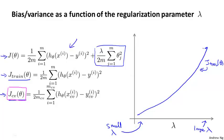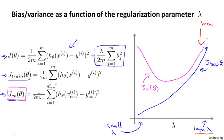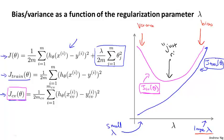As for the cross validation error, over on the right with a large value of lambda, we may end up underfitting — this is the bias regime — so the cross validation error will be high. Whereas on the left, this is the high variance regime, where if we have too small a value of lambda we may be overfitting the data, and so the cross validation error will also be high. It will often be some intermediate value of lambda that works best in terms of having a small cross validation error or a small test set error.